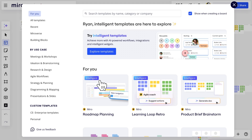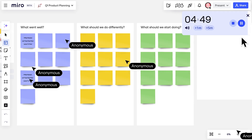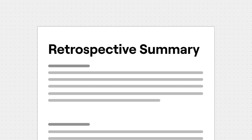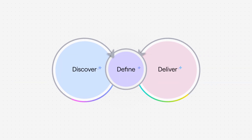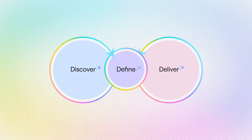To review the how, we rely on retrospectives. This is a common ritual in the agile methodology, but it's in no way exclusive to agile teams. Miro has templates where everyone can safely give feedback and debrief on our way of working, so we can continue to improve in future cycles.